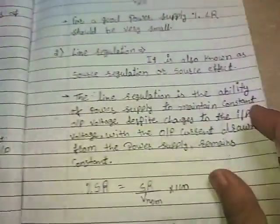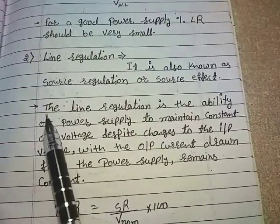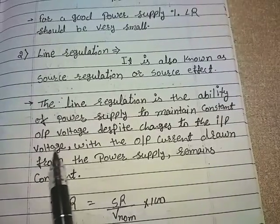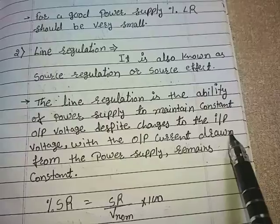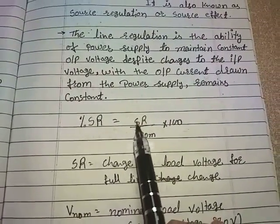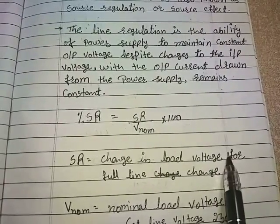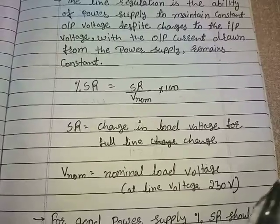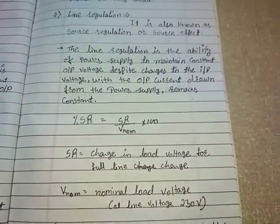Now let's move to the next characteristic: line regulation, also known as source regulation or source effect. Line regulation is the ability of a power supply to maintain a constant output voltage despite changes to the input voltage, while the output current drawn remains constant. The percentage SR is given by SR / V_nom × 100, where SR is the change in load voltage for the full line change and V_nom is the nominal load voltage, generally taken as 230 volts. For a good power supply, percentage SR should be very small.